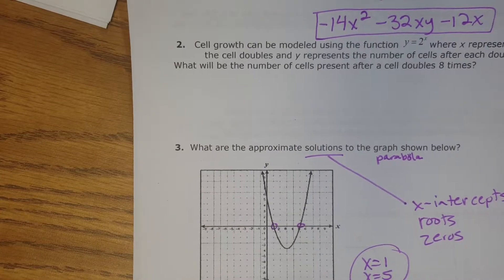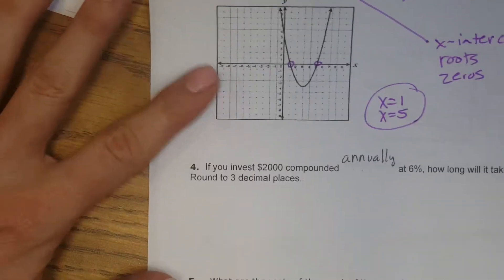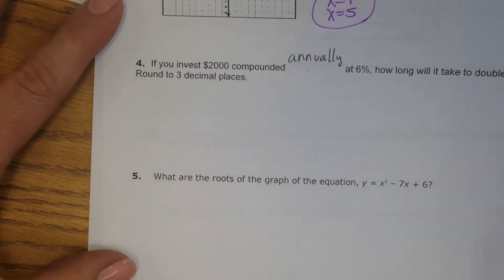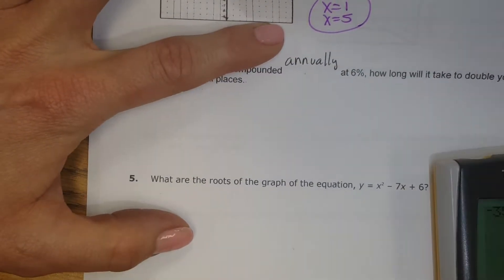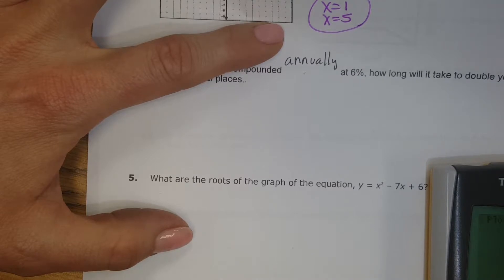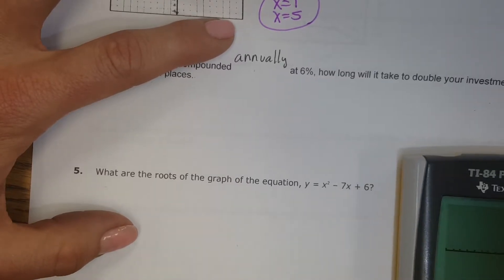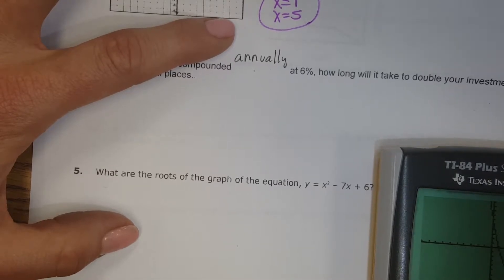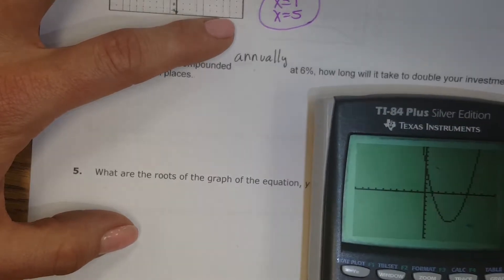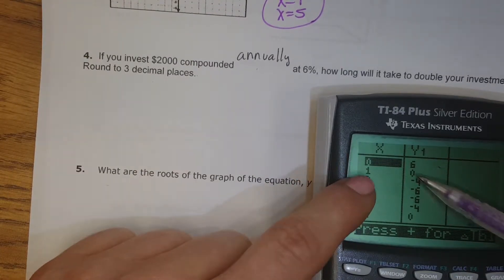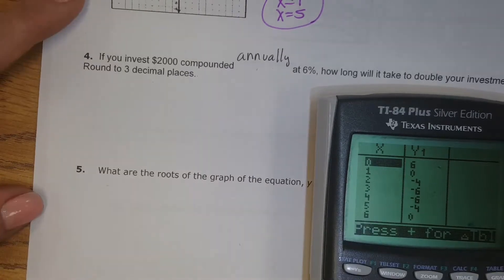We did 4 together. We'll do 5. It says, what are the roots of the graph of this equation? So there we go. Now you can see it. So the easiest way to find the roots is just to use your y equals key. We're going to type in x squared minus 7x plus 6. Hit graph. I can see it's going to have two roots, or two solutions. It looks like they're at 1 and 5, but I can double check to make sure by looking at my table. And remember the zeros are where the y is 0, or the roots. So we have 1 and 6.